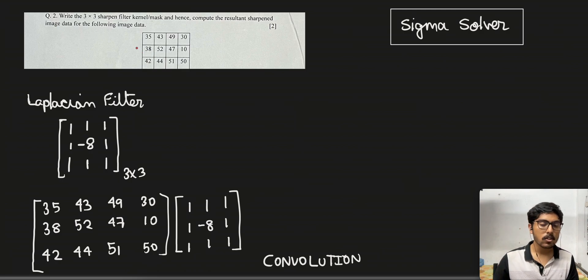So we are given this particular image data in matrix form and we have to first mention a sharpened filter of 3x3 size and then compute the sharpened image data. For this problem we will be using the Laplacian filter.